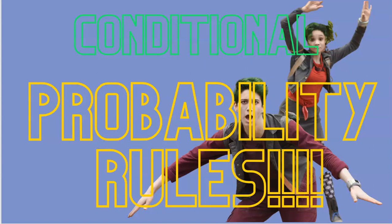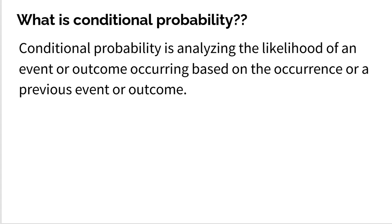What's going on, everybody? In this video, we're going to tackle conditional probability, one of the most important rules you need to learn when it comes to understanding all the rules for probability. So let's dive right into what is conditional probability. Conditional probability is analyzing the likelihood of an event or outcome occurring based on the occurrence of a previous event or outcome.